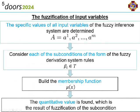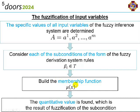Formally, the fuzzification procedure is performed as follows. At the beginning of fuzzification, the specific values of all input variables of the fuzzy inference system are determined — that is, the set of values. Next, we consider each of the subconditions of the fuzzy derivation system rules, where t is some term with the corresponding membership function x, which can be analytically specified. The value is used as an argument of x, and the quantitative value found is the result of fuzzification of the subcondition.